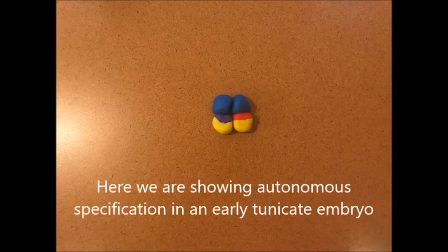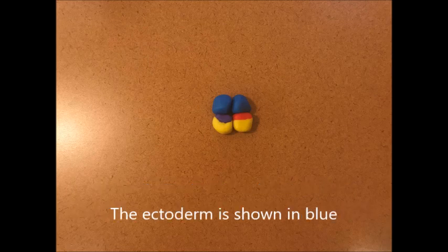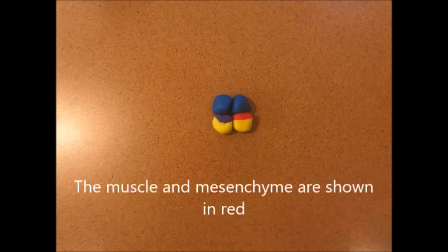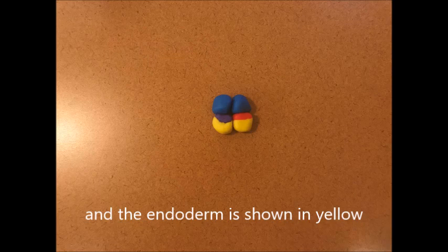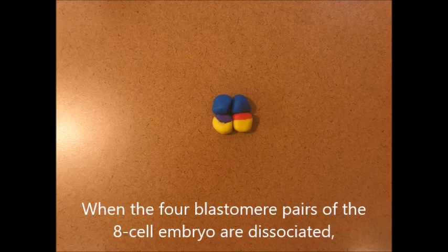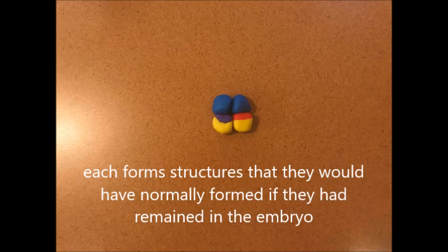Here we are showing autonomous specification in an early tunicate embryo. The ectoderm is shown in blue, the notochord is shown in purple, the muscle and mesenchyme are shown in red, and the endoderm is shown in yellow. Each sphere represents one blastomere pair.